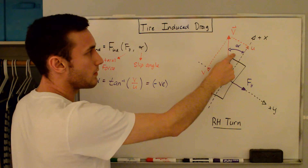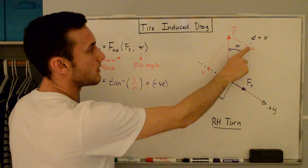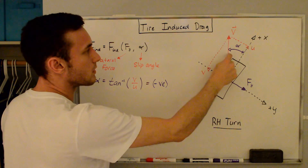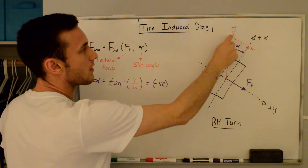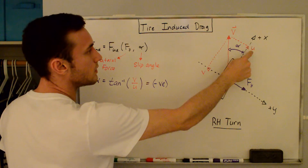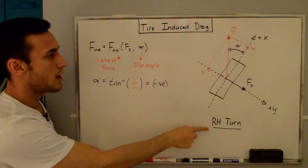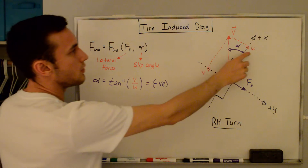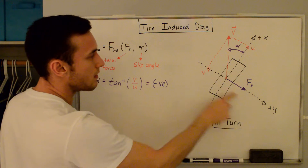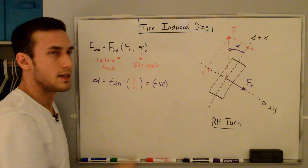The slip angle is defined as the angle between where the tire is going and where it's pointed. This forms a triangle, and the slip angle is the inverse tangent of v over u. For this particular right-hand turn, u is positive — pointing in the positive x-direction — while v is pointing in the negative y-direction. So the slip angle for a right-hand turn is negative.